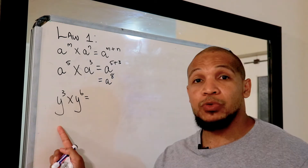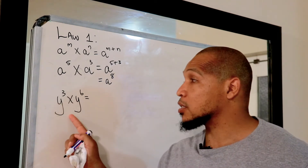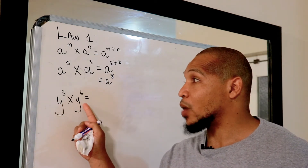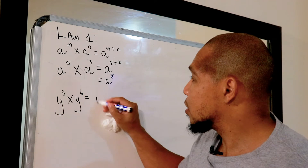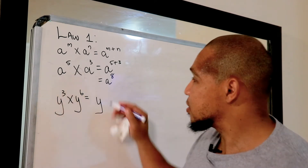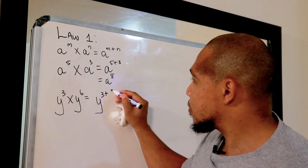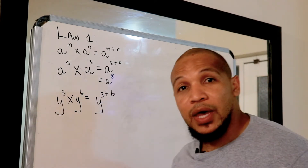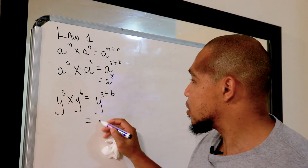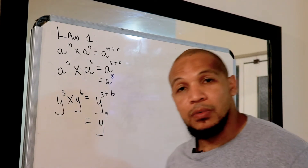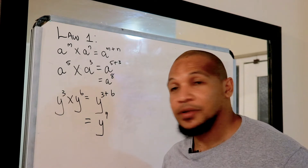Another example: we have y to the power of three multiplied with y to the power of six. So we write our base, we add our exponents, and the answer is y to the power of nine.